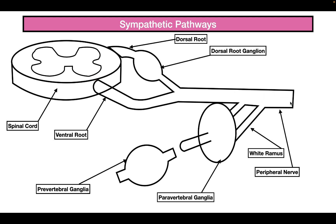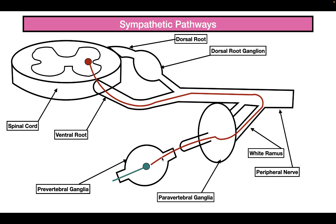Another pathway that the sympathetic nervous system can take is the following. The pre-ganglionic cell body is present in the lateral horn, and it projects its axon through the ventral root, into the peripheral nerve, through the white ramus, through the paravertebral ganglia, and into the prevertebral ganglia. It's here where they synapse with the post-ganglionic neurons, and then the post-ganglionic neurons go to the target cell.